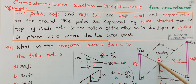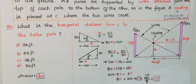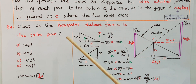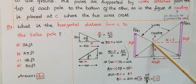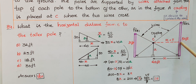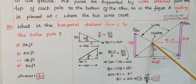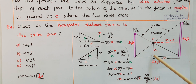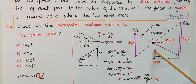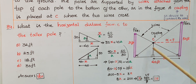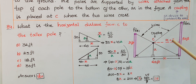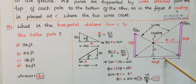The first question is: what is the horizontal distance from C to the taller pole? If you draw a line from C to the taller pole, assume this value as x. If you draw a perpendicular line from C to the ground, assume this value as a.